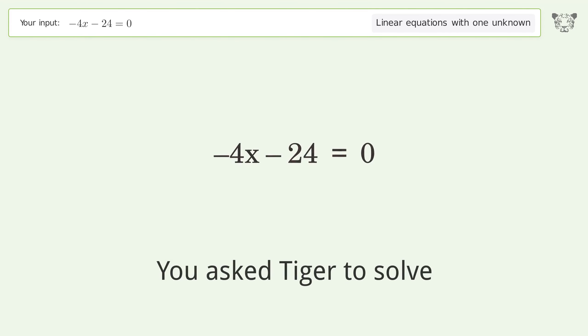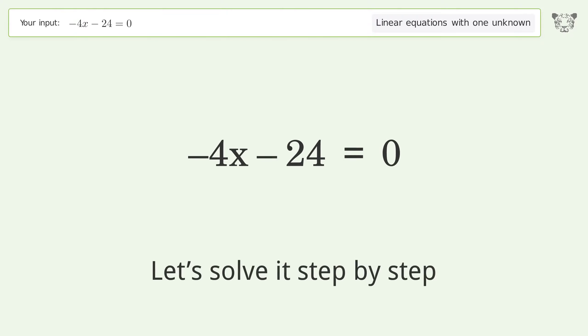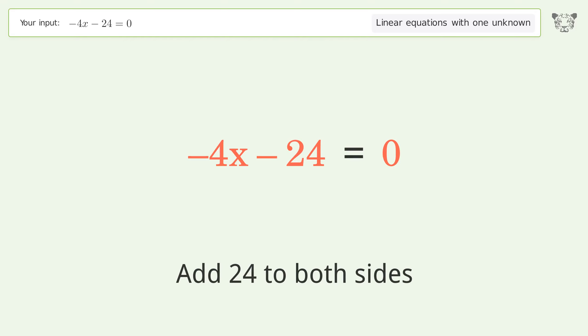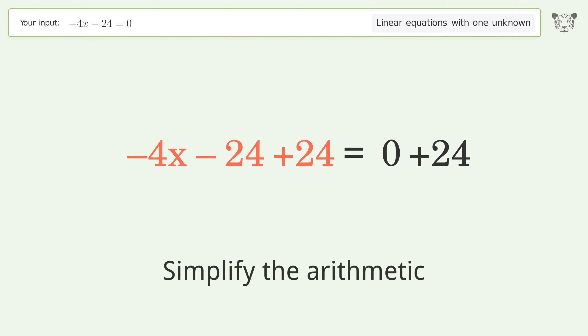You asked Tiger to solve this. It deals with linear equations with one unknown. The final result is x equals negative 6. Let's solve it step by step. Group all constants on the right side of the equation. Add 24 to both sides. Simplify the arithmetic.